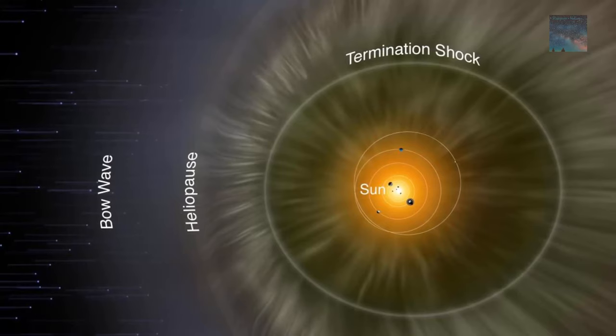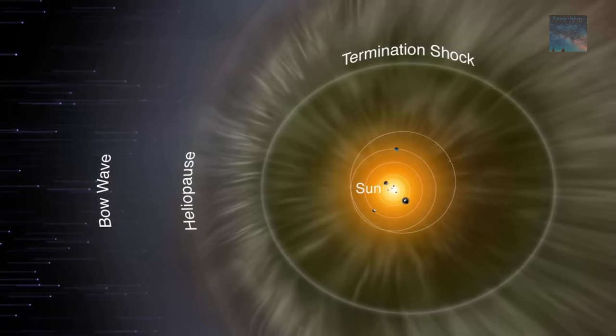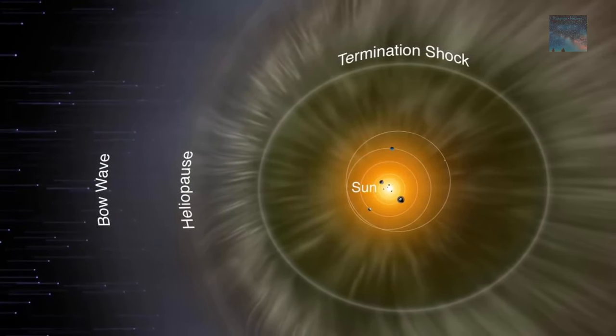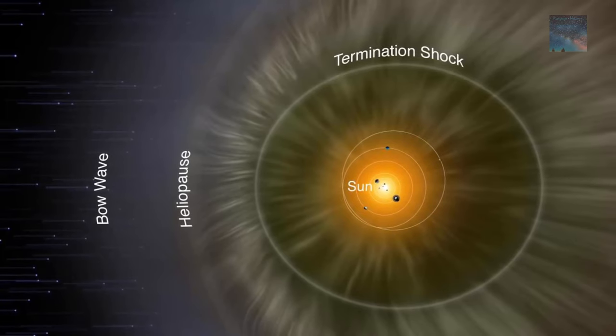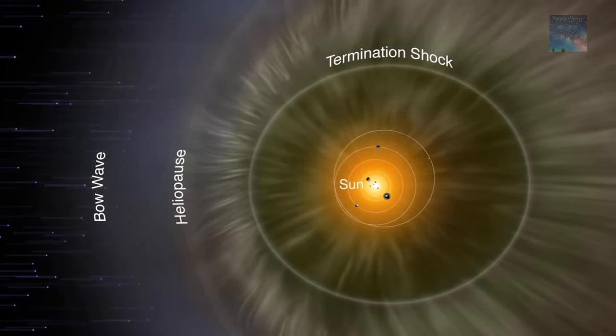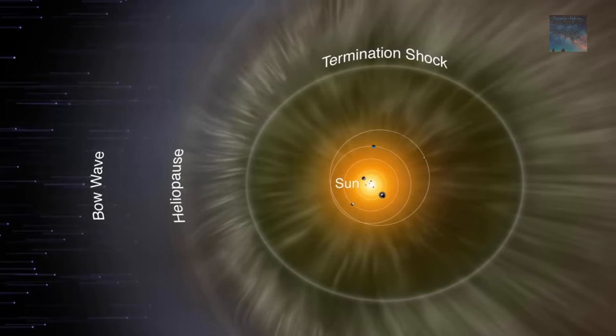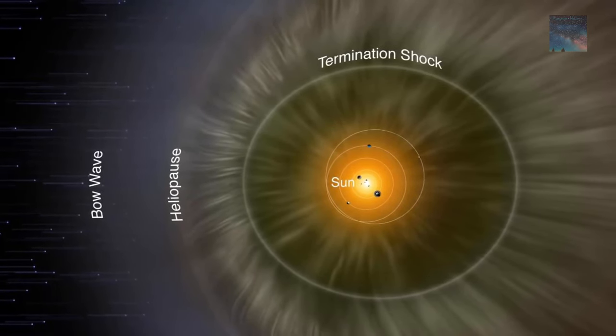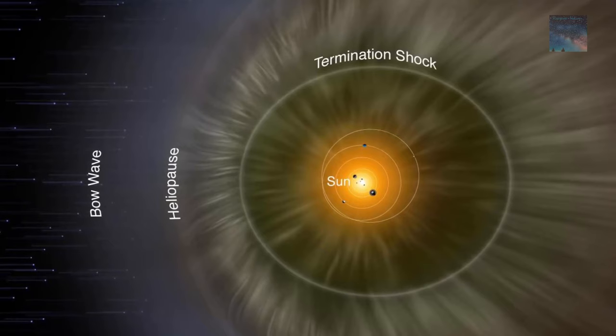Along these boundaries, solar wind particles mix with particles from interstellar space. Collisions are inevitable. The hot, electrically charged solar wind particles bang into the slower, colder neutral atoms from interstellar space, stealing an electron and becoming neutral themselves.